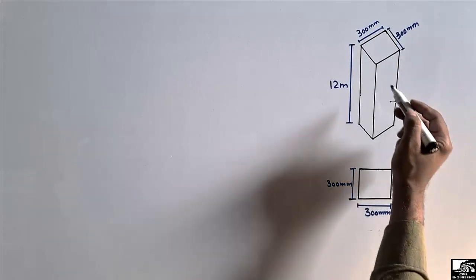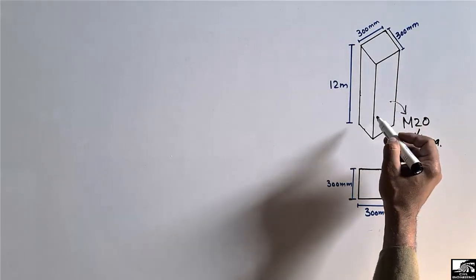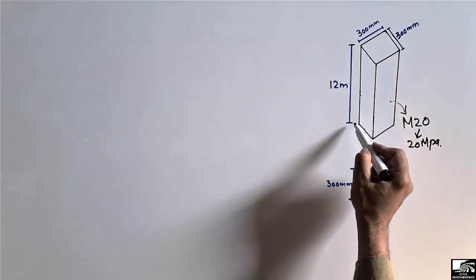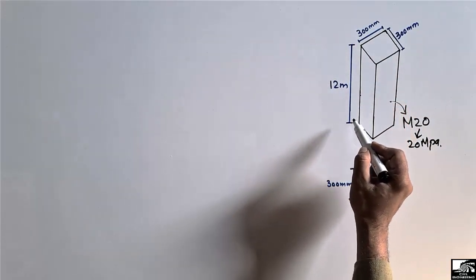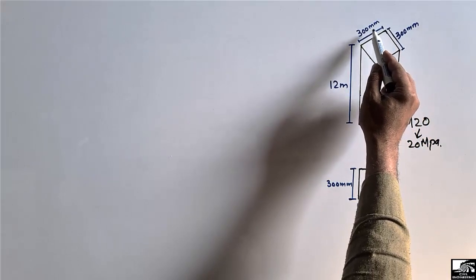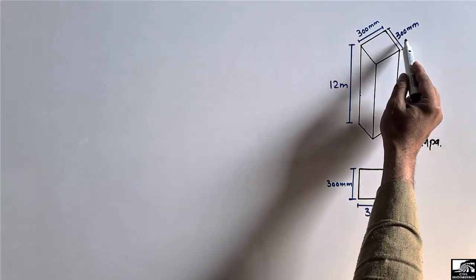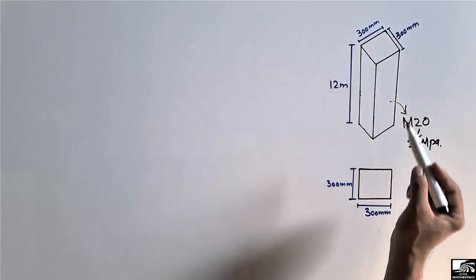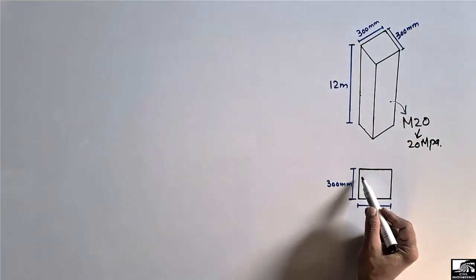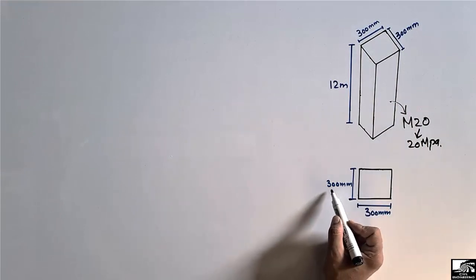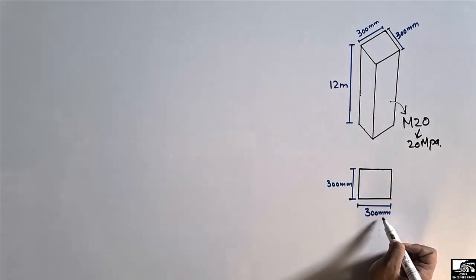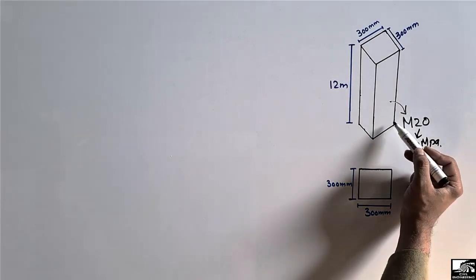The dimensions of the RCC column are given: a height of 12 meters and a cross-section of 300 mm by 300 mm, so it is a square column. We can see the cross-section of this column with dimensions of 300 mm by 300 mm.